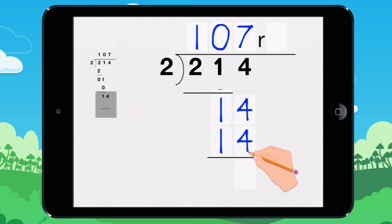We need to find the remainder. 14 minus 14 equals 0. The remainder is 0.